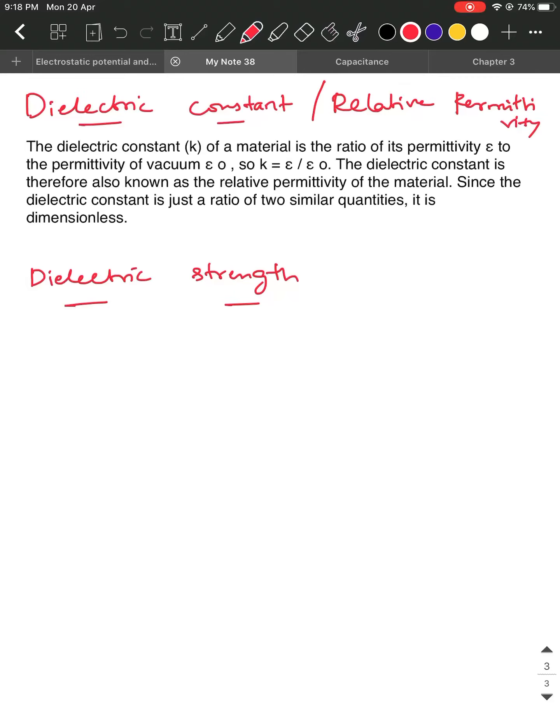Now we will discuss the next term which is known as dielectric constant, or it was also known as relative permittivity. Generally in physics, wherever you see relative, relative means it can either be a difference or ratio of something.